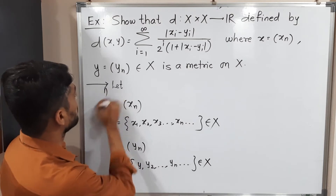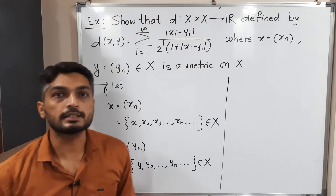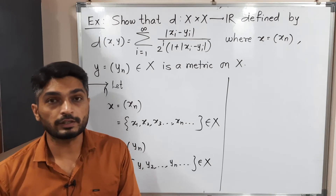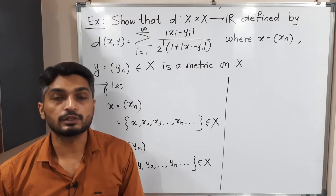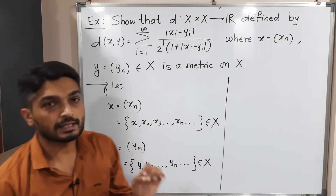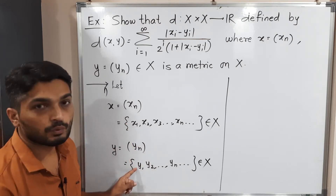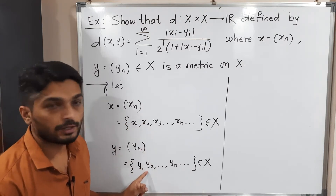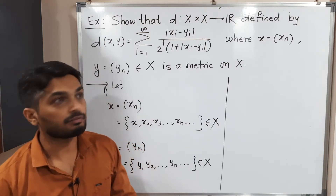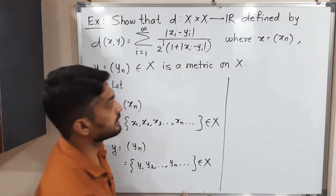I have started the first property. The first property is D(x, y) is always greater than or equal to zero — that means the value of D(x, y) cannot be negative. As you can see, the definition involves mod(xi - yi), that is |x1 - y1|, |x2 - y2|, |x3 - y3|, and so on, and finally their summation is taken. Since mod is present, no term can be negative.